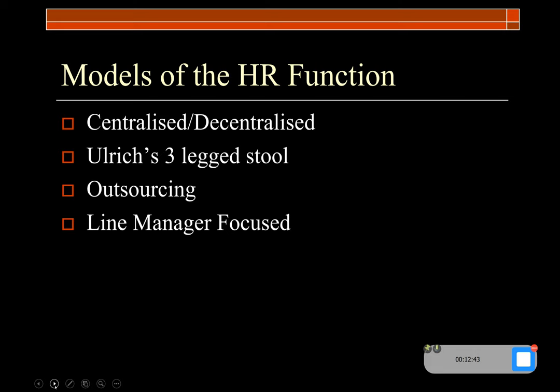You can have centralised HR — as the name suggests, everything is done from head office or one central base. Or you can have a centralised function that devolves HR down to individual departments. A good example might be councils: there's a corporate HR at head office maintaining consistency across the whole organisation, but the education department may have its own HR team and social services their own dedicated team. That would be decentralised — devolving power to different areas within the organisation. Ulrich's three-legged stool we'll come back to.